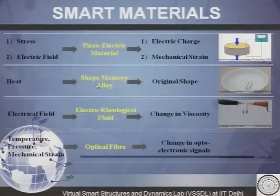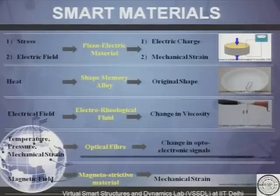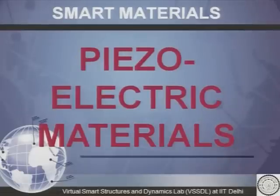Next type is optical fibers. When there is a change in temperature or pressure and when mechanical strains are applied on these materials, there is a change in the optoelectronic signals. The other type is the magnetostrictive materials — when a magnetic field is applied on these materials, they produce mechanical strains. Now we will be concentrating on the piezoelectric materials, because the whole lab is actually based on these materials.